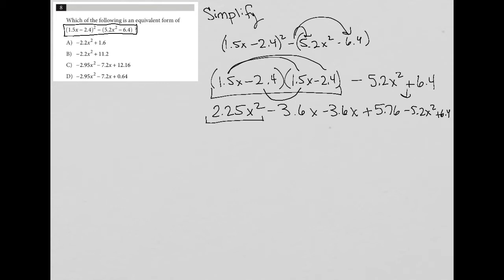I have 2.25x squared minus 5.2x squared. So let's throw that to my calculator. 2.25 minus 5.2. And I get negative 2.95x squared.